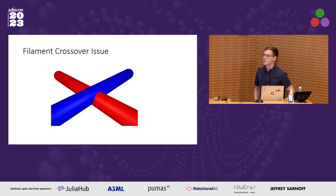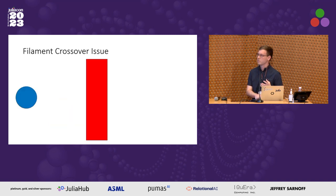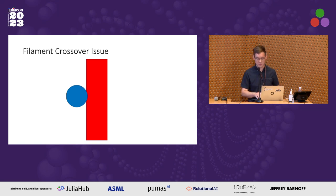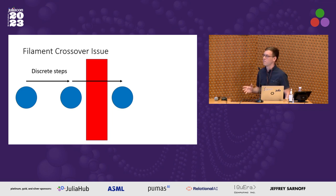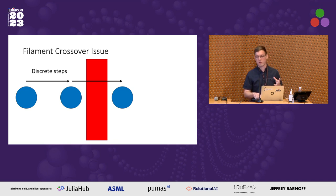One big issue I came across is filament crossover — how do you prevent two cylinders from intersecting? We have a blue cylinder coming out of the screen and a red cylinder going up and down. As we do our minimization, we want them to come into contact and not teleport through each other. Unfortunately, because we're solving this on a computer in discrete steps, if your steps are really big, filaments can end up teleporting through each other, which can ruin the whole topology of the system.